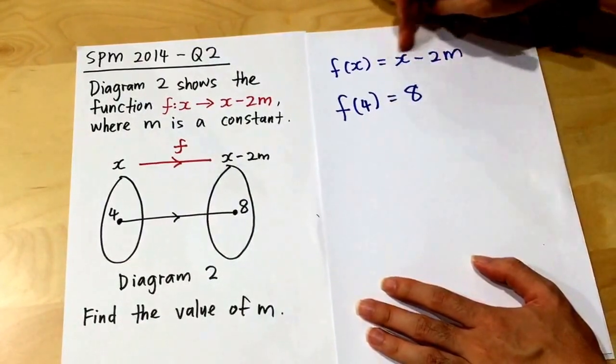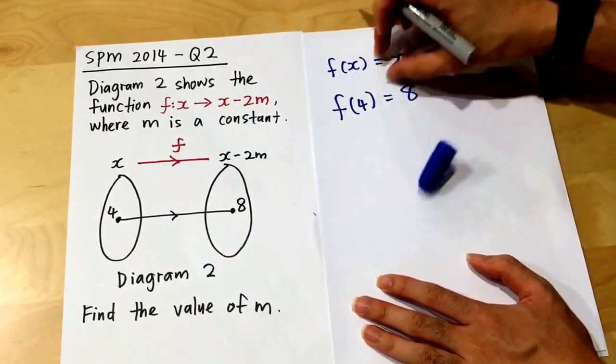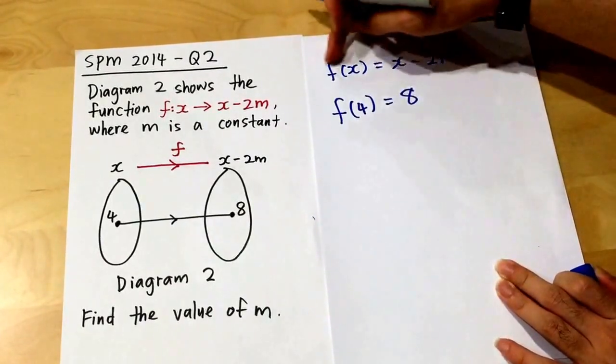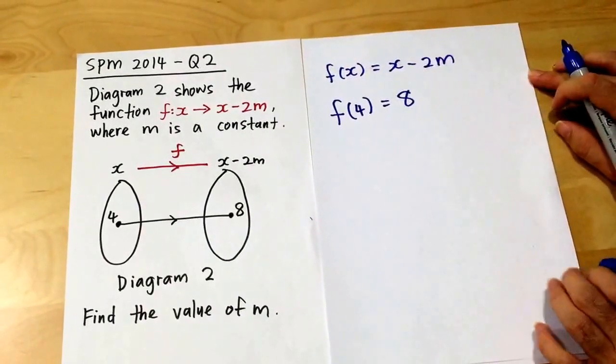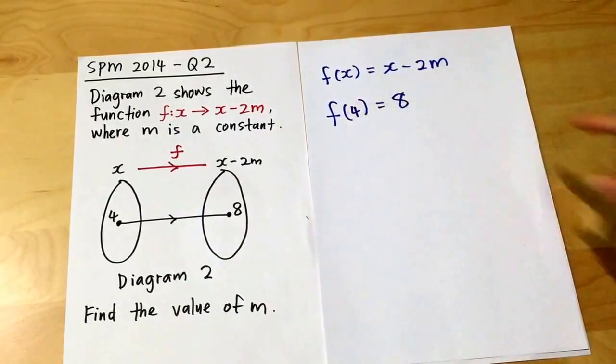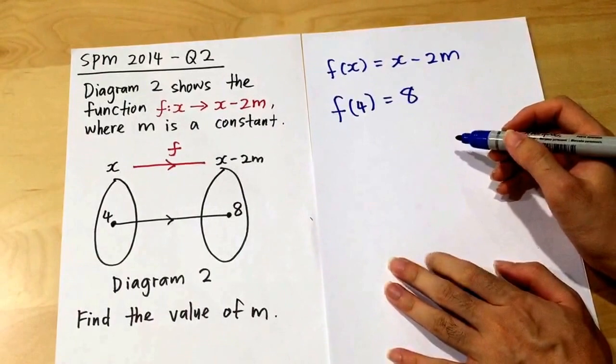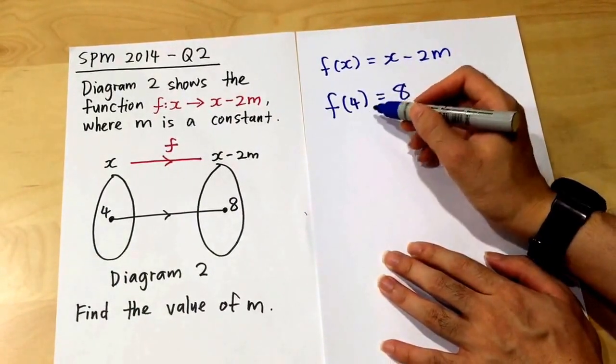Everything, all the x inside this equation will change into 4, and the whole thing will equal 8. You have to understand how to write things like this. It's very simple.